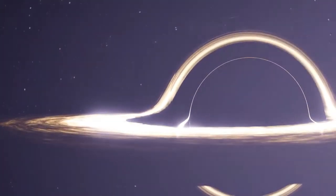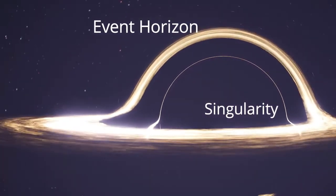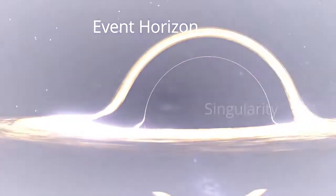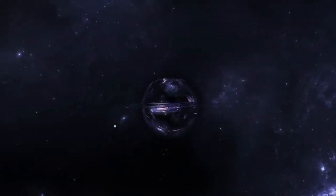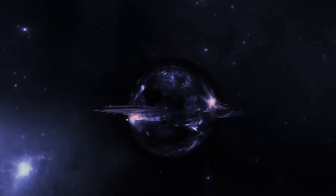Black holes have three layers: the outer and inner event horizon, and the singularity. The boundary of the black hole is called the Event Horizon. It is the closest thing a black hole has to a surface, but it's not a physical surface. It's an invisible bubble in space.